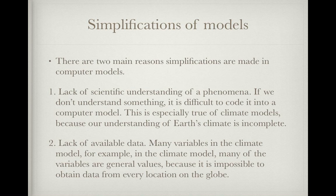Simplifications. There are two main reasons that simplifications are made in computer models. First, lack of scientific understanding of a phenomenon — if we don't understand something, it is really difficult to put it into a computer model. This is especially true of climate models because our understanding of the climate system is still incomplete. Second, lack of available data — many variables in the current model are general values because it is impossible to obtain data from every location in the world for every specific variable.